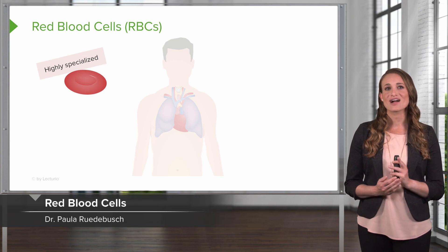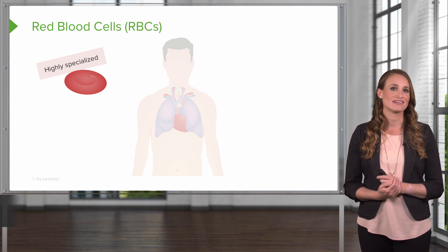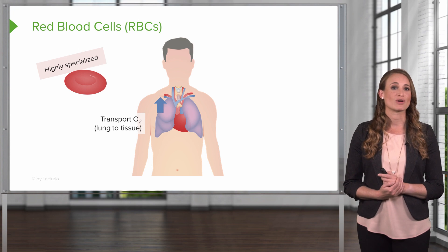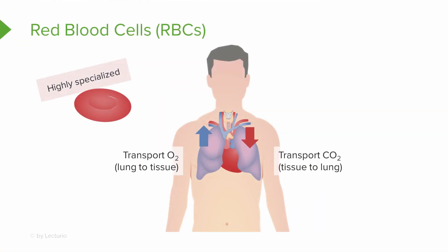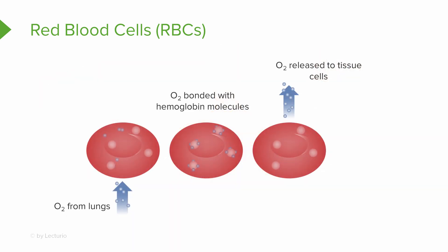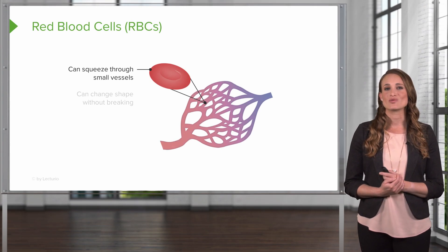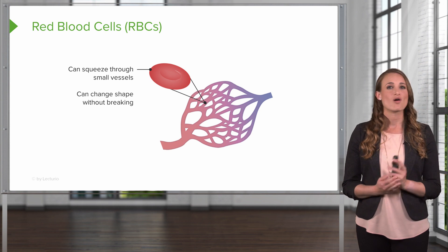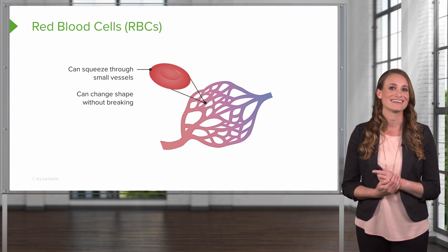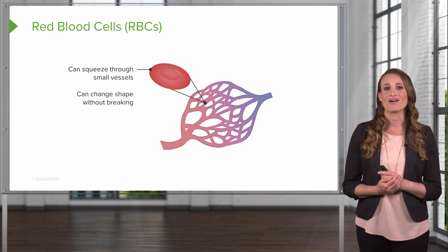First, we're going to talk about red blood cells. These are highly specialized and are the most abundant cells in the blood, accounting for approximately 40–45% of the blood. They're used to transport oxygen and also carbon dioxide from the tissues to the lungs. They're shaped as biconcave discs, which increases the surface to volume ratio. Oxygen from the lungs binds with hemoglobin molecules on the red blood cell, and then it's transported and released to the tissues. Red blood cells can squeeze through small vessels and change shape without breaking. Once they squeeze through a tiny vessel and are compressed, they can pop right back into their original shape because they're squishy. They can be broken if they're stretched or swell, and this can destroy the cell.